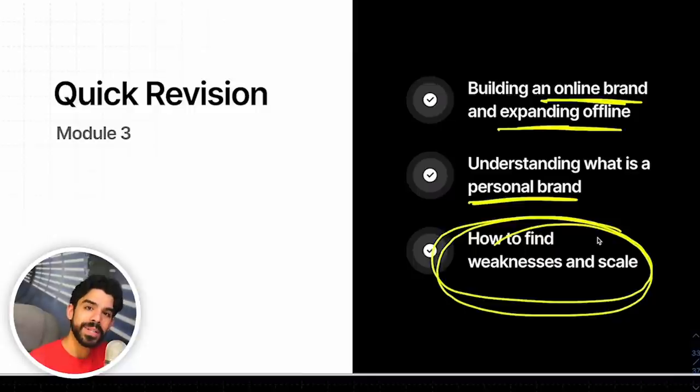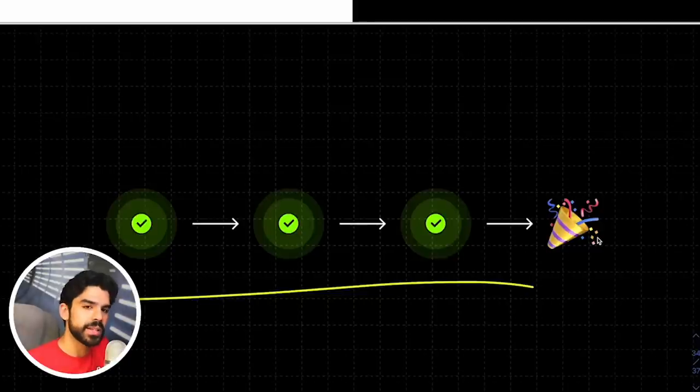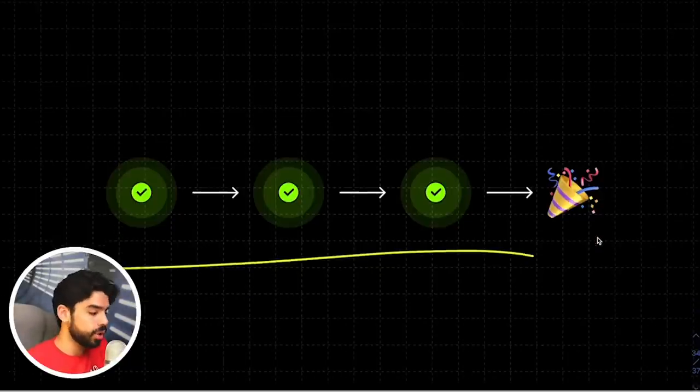Let's do a quick revision of module number three. We understood the importance of first starting your online brand first. I gave you a very important video that will tell you how to go through that checklist and then expanding offline. Then I gave you some clues on what exactly is a personal brand. And then in the end, I have reminded you to have an audit of all your weaknesses and prioritize B2B and scale in whatever it is that you're trying to do. I don't want to go into a lot of detail in one single go because I've already given you a long list of resources.